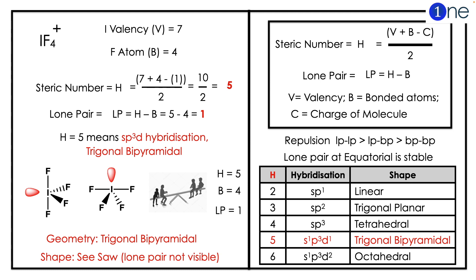So geometry is trigonal bipyramidal. With one lone pair there, you have a seesaw structure because the lone pair occupies equatorial position. So if you look at it, it will be like a seesaw game. So the shape of IF4 plus is seesaw structure.